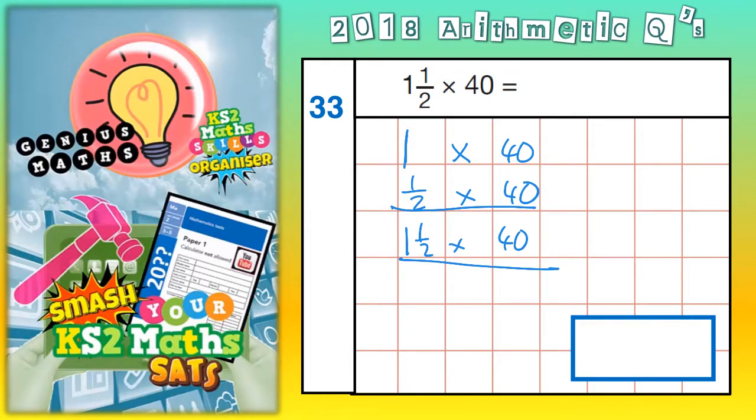So 1 times 40 is obviously 40. Now, ½ times 40 is the same as ½ of 40, and that's easy. ½ of 40 is 20.